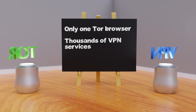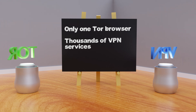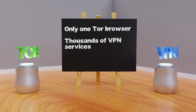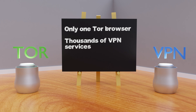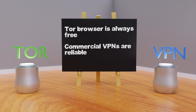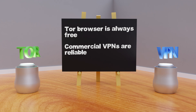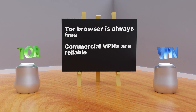Another important difference is there is essentially only one Tor browser, even though it may be available as Tor Browser for Android or iOS. On the other hand, there are thousands of VPN services available across the web and app stores. While using the Tor browser is always free, commercial VPNs that are reliable and safe to use require you to pay up front.